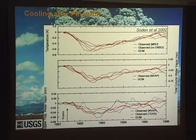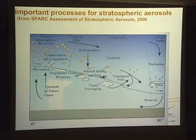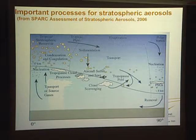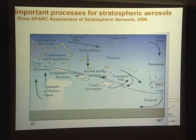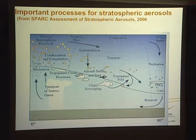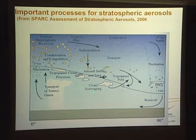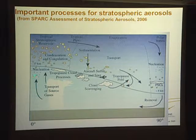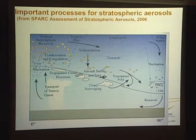There are some things that climate models are quite good at. On the other hand, there are some things we're challenged by. I'm going to remind you of the processes that control stratospheric aerosols and how they're represented in models. I've taken this cartoon from a SPARC assessment document from 2006 — it's a cross-section of the planet from equator to pole showing where stratospheric aerosols occur, just above the tropopause.